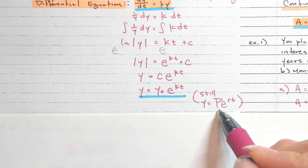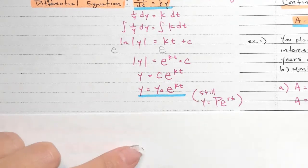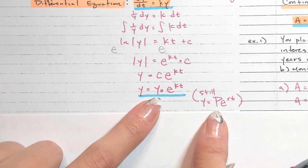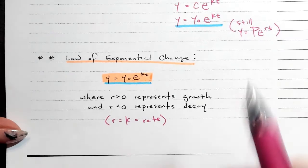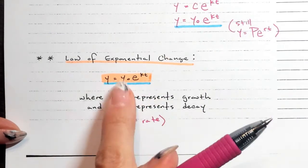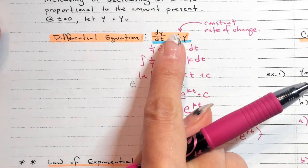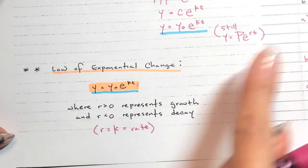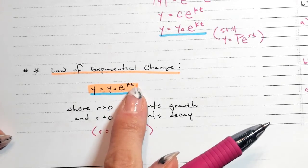In the PERT formula, P stands for principal — the money you put into the bank. Your principal goes in, multiplies by e^(rt), and you get money out. P is the same as y-sub-zero, the initial value. This is the law of exponential change: it's equivalent to that differential equation with a constant rate. If r is positive, you get exponential growth; if r is negative, you get exponential decay.